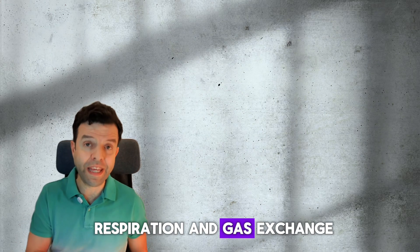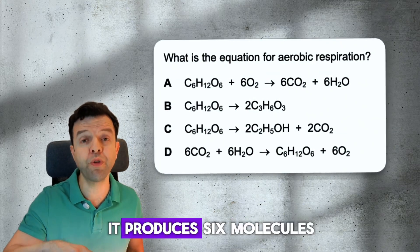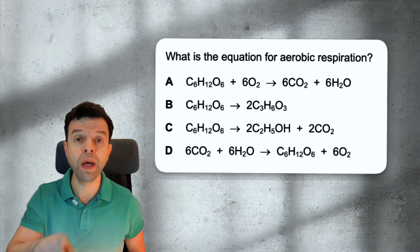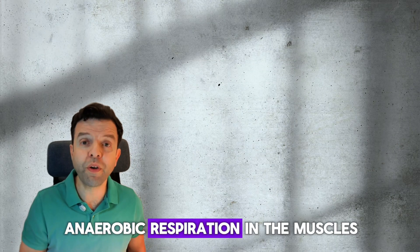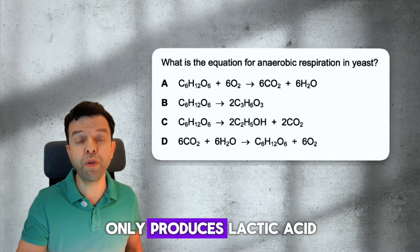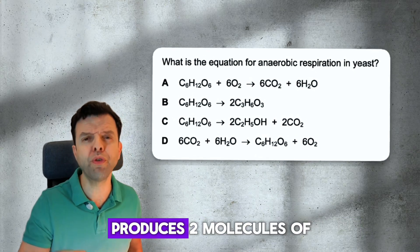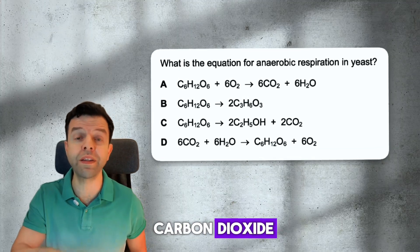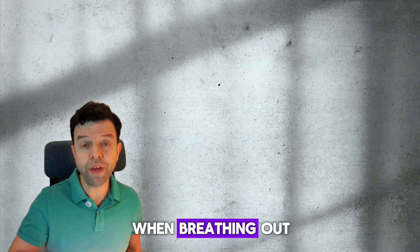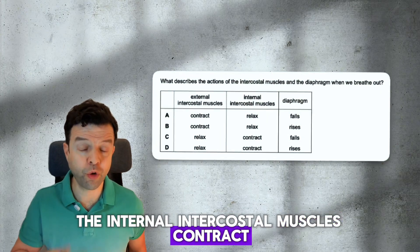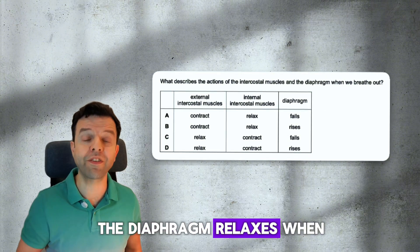Lastly, we'll talk about respiration and gas exchange. Aerobic respiration releases the most energy. It produces 6 molecules of CO2 and 6 molecules of water per glucose. Anaerobic respiration in the muscles only produces lactic acid, while anaerobic respiration in yeast produces 2 molecules of carbon dioxide and 2 molecules of ethanol. When breathing out, the internal intercostal muscles contract while the external relax. Also, the diaphragm relaxes when we exhale. The opposite applies when we breathe in.